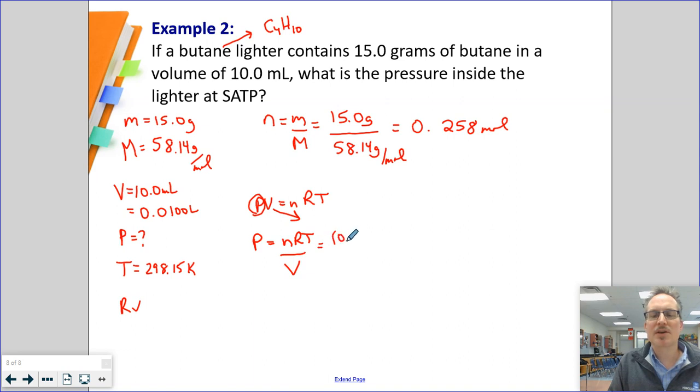My moles was 0.258 moles. R value is always 8.314 kPa·L over mol·K. My temperature is 298.15 kelvins. And I'm going to divide by 0.0100 liters.